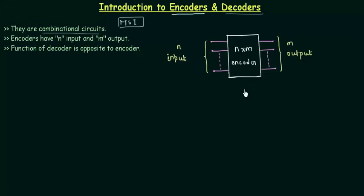If I talk about the encoder, there are N inputs as you can see here and M outputs. Now there is a relation between this input N and the output M that we will see now. Before that, let me tell you that the function of decoder is opposite to the encoder.